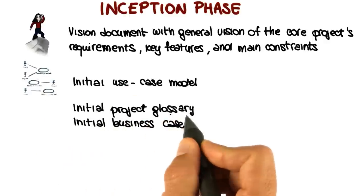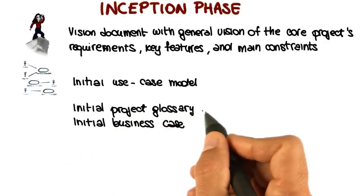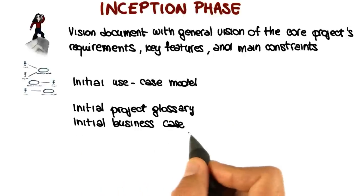Two additional deliverables are the initial project glossary, which describes the main terms used in the project and their meaning, and the initial business case, which includes business context and success criteria.